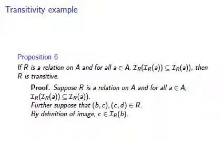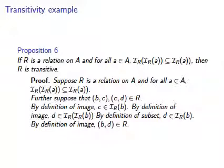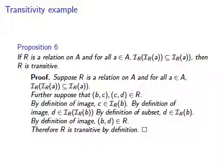C must be in the image of B since B is related to C. Likewise, since C is related to D and C is in the image of B, D must be in the image of the image of B. This is basically saying that there is something in the image of B, namely C, that is related to D. Now we can use the fact we assumed. We assumed it was true for any element little a in set big A. B is such an element, so we can apply it to D and B here. For D to be in the image of B means that B is related to D. That's exactly what we need to prove that R is transitive.